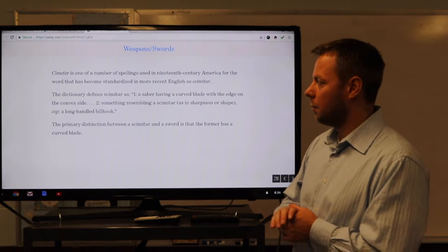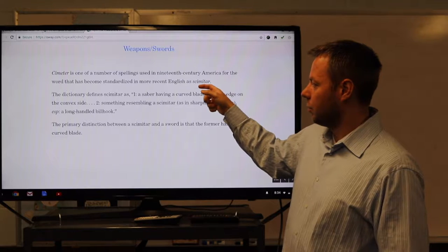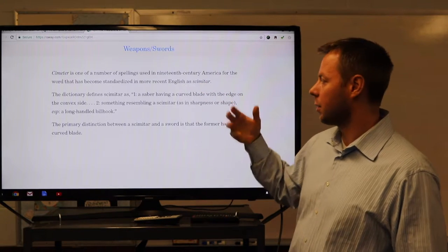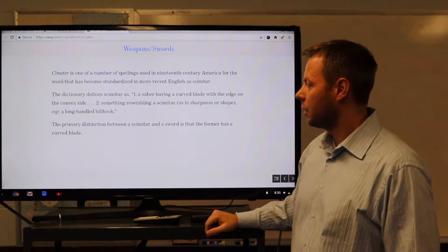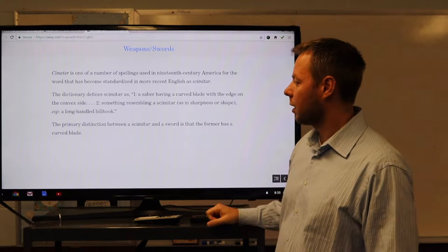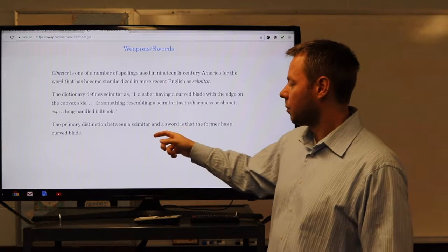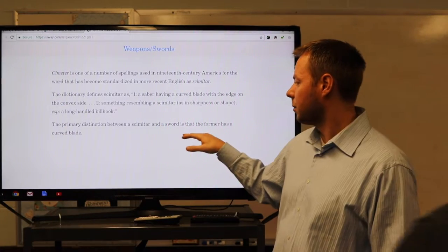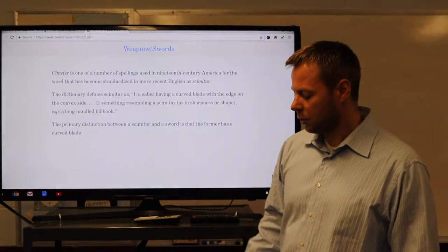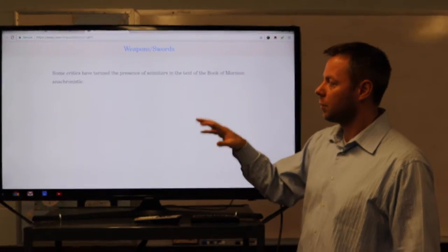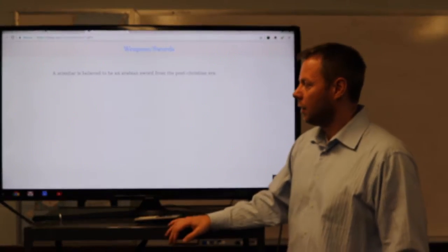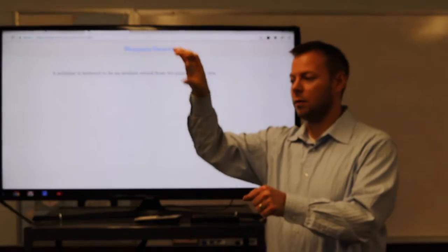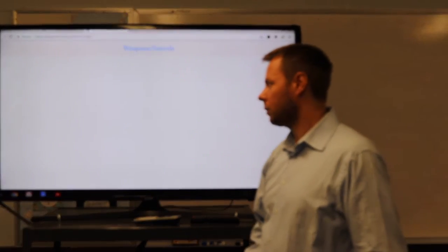The scimitar, now, in more recent English, would be like this, and it's pronounced simitar sometimes. So it's one of a number of spellings used in the 19th century for what is now the scimitar. The dictionary defines it as a saber having a curved blade with the edge on the convex side, something resembling a scimitar. So the primary distinction between a sword and a scimitar is that the former has a curved blade. So why has this been deemed a problem? Critics have termed the presence of scimitars in the text of the Book of Mormon anachronistic because they were thought to be an Arabian sword from the post-Christian era. So you think of those big swords in Arabia that are scimitars. So it's thought to be anachronistic.